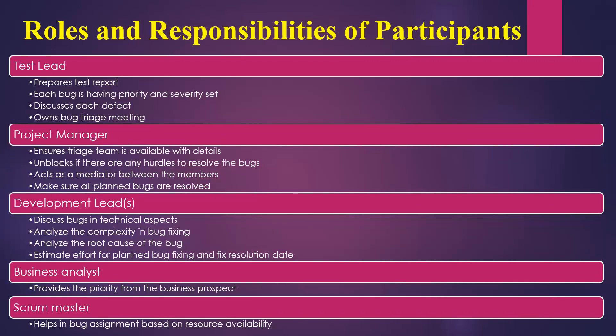Roles and responsibilities of the triage team: The test lead is responsible for preparing a test report before the meeting begins. Each bug should have a priority and severity assigned. When the meeting begins, the test lead initiates the discussion, presenting bugs starting from the most severe ones. The test lead is the key person in this meeting and contributes the major share of the discussion.